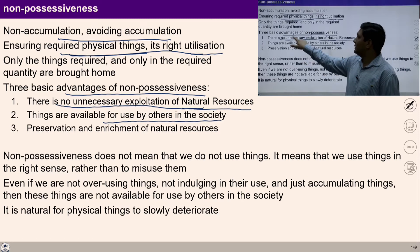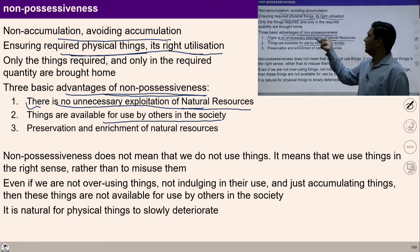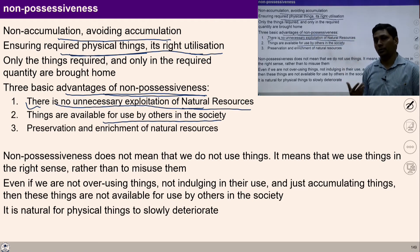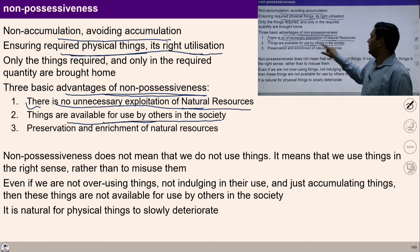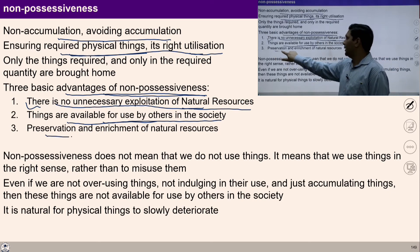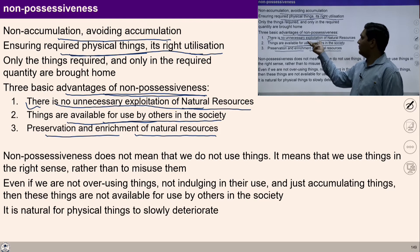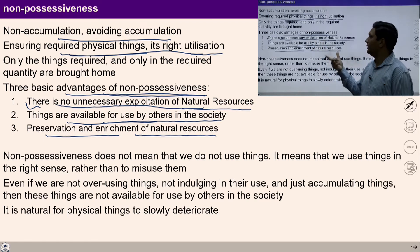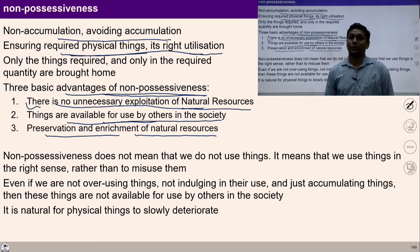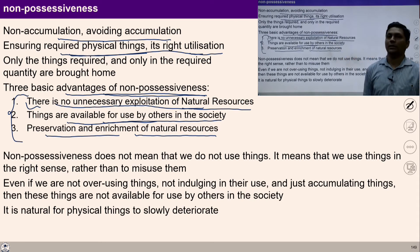There are three basic advantages of non-possessiveness. Number one: no unnecessary exploitation of nature — I am no more a burden on physical resources. Second: things become available for other people when I live with non-accumulation. Third: preservation and enrichment of natural resources happens naturally. Once I am able to identify my needs and right-utilize things, preservation and enrichment of natural resources becomes natural. These are the outcomes and advantages of living with non-accumulation.